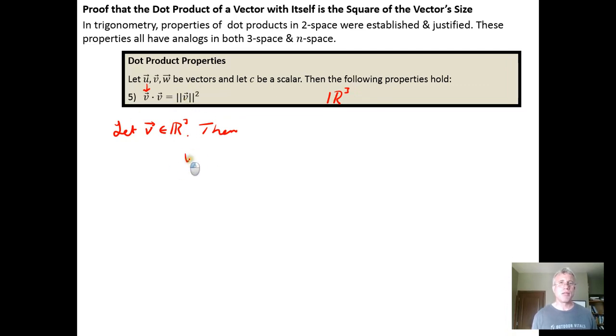So then I take V dotted with V, and in R3 this is a three component vector. I'm really taking V sub 1, V sub 2, V sub 3 and dotting it with itself: V sub 1 comma V sub 2 comma V sub 3.